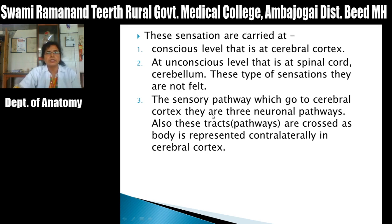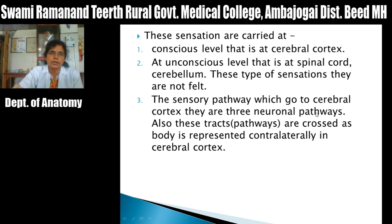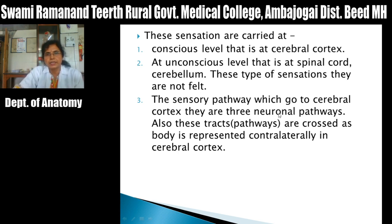The sensory pathways which go to the cerebral cortex consist of three neurons in their course, so they are called three-neuronal pathways. These neurons are named first order, second order, and third order neurons. Also, these tracts are crossed — the tracts going to the conscious level at the cerebral cortex are crossed because the body is represented contralaterally in the cerebral cortex. The right side of the body is represented in the left side of the cerebral cortex and vice versa.